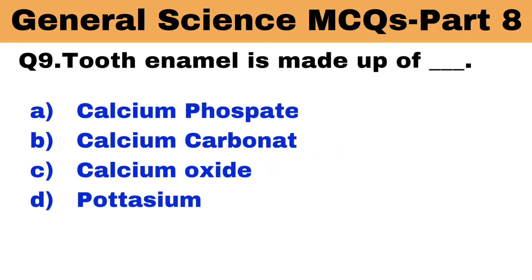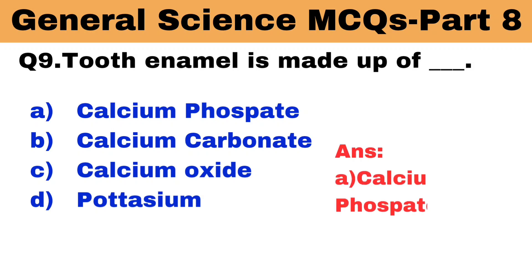Question number 9. Tooth enamel is made up of what? The right answer is option A: calcium phosphate.